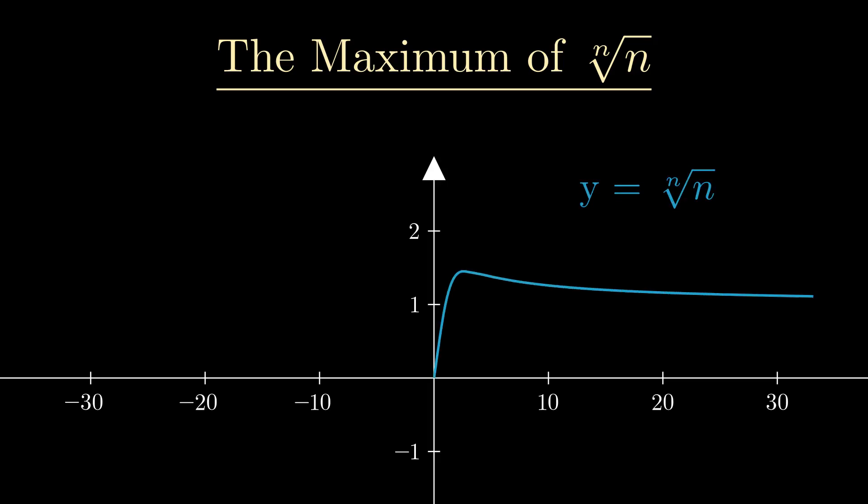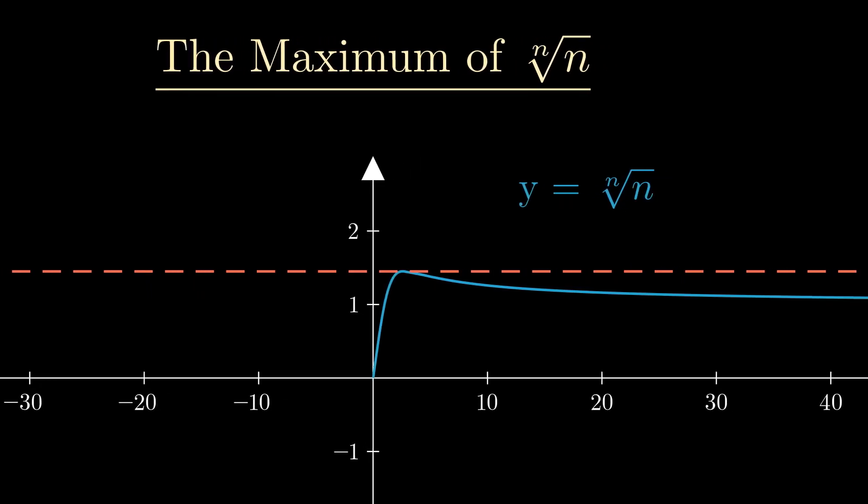The purpose of this video is to try and figure out the maximum for the nth root of n. Before we start, we can get a general idea of what we're looking for by plotting the graph of y equals the nth root of n. We can see there's a maximum quite early on in the graph, and I'm actually gonna draw a tangent to this so we can see roughly where this lies. For now, I'm going to assume that this is actually the maximum of the graph.